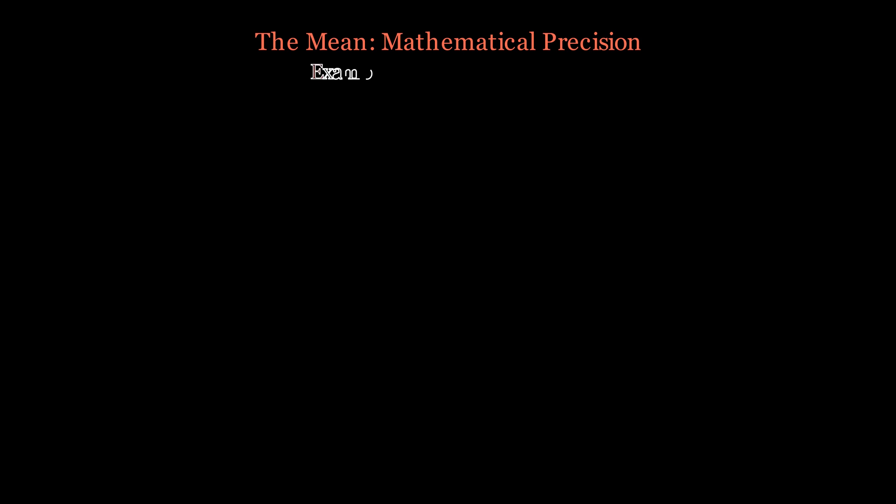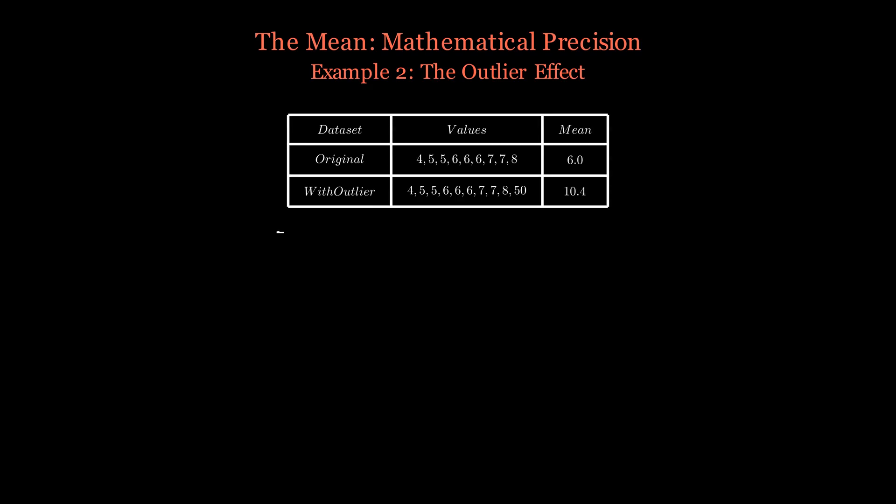Here's a powerful demonstration of the mean's sensitivity to outliers. Our original data set has a mean of 6.0, a nice representative center. But watch what happens when we add just one extreme outlier of 50—the mean jumps to 10.4, an increase of 4.4 points. This single outlier has dramatically shifted our measure of center, even though 9 out of 10 values remain clustered between 4 and 8.